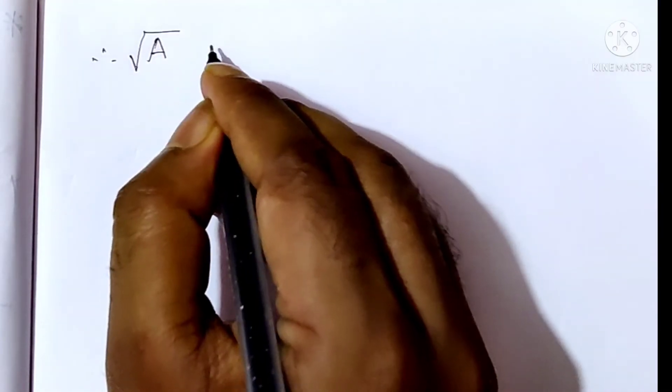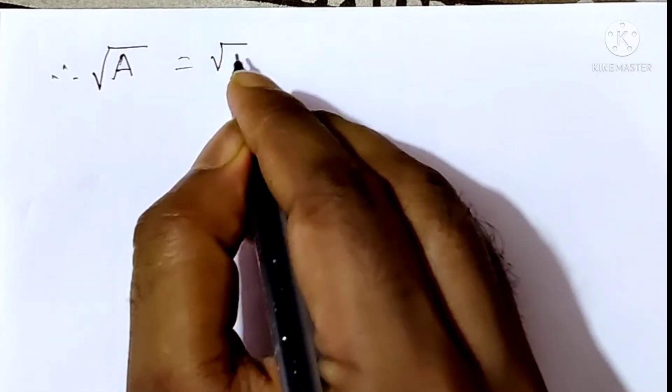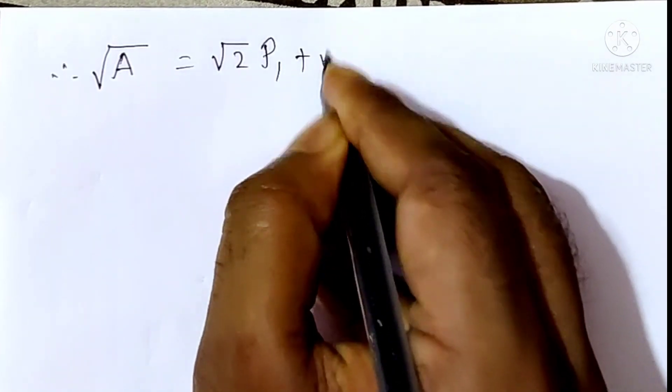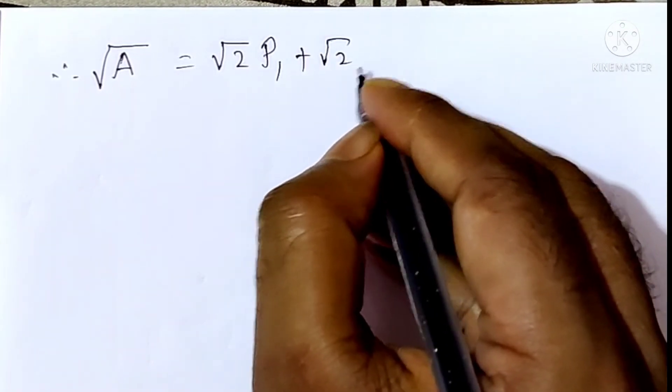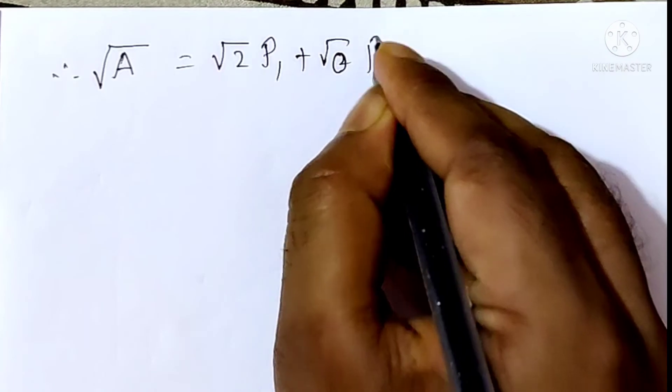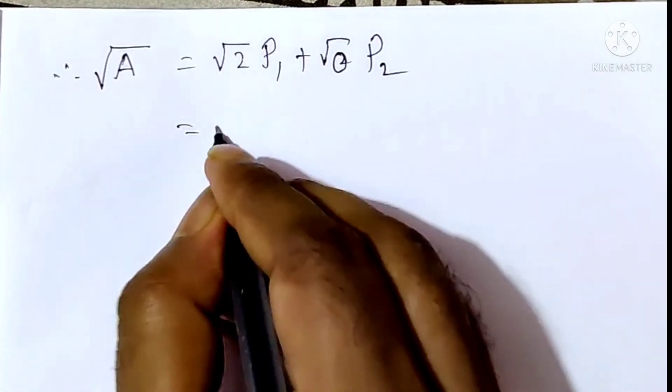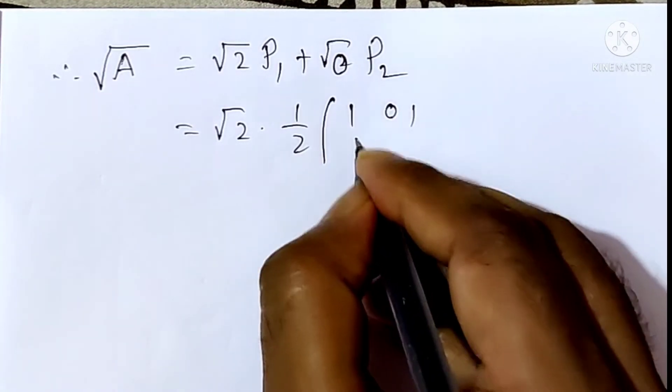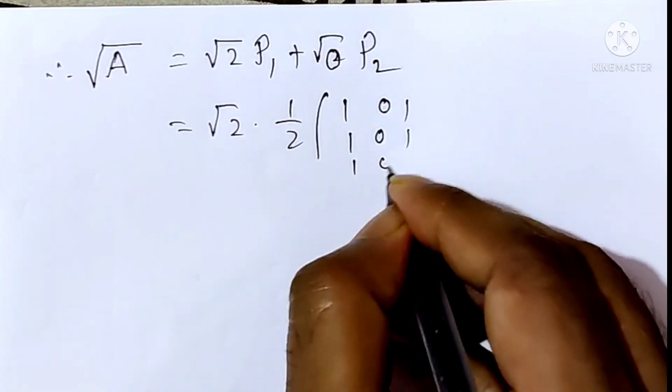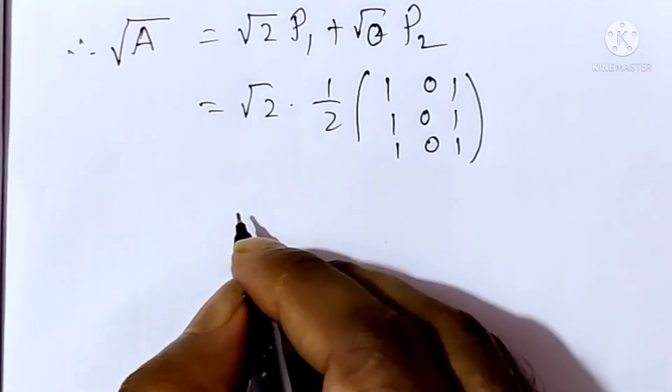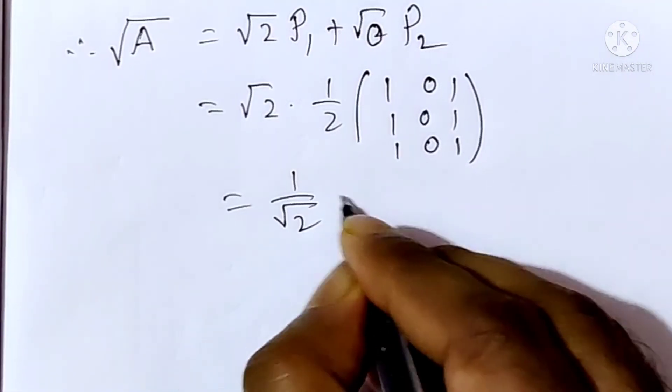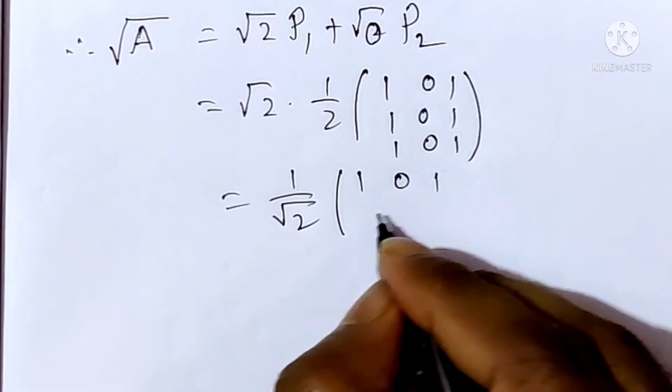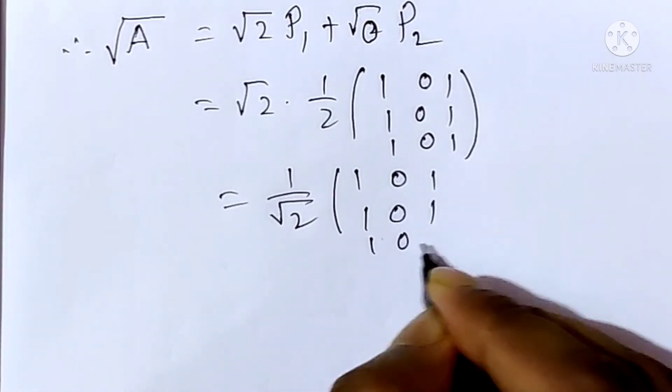Therefore, root A equals root 2 times P1 plus root 0 times P2. That equals root 2 times 1/2 of [1,0,1; 1,0,1; 1,0,1]. That equals 1 over root 2 times [1,0,1; 1,0,1; 1,0,1].